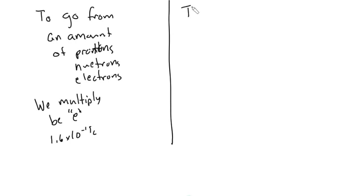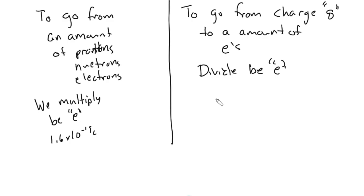But to go from charge, which will be some q number, to an amount of e's, I'm going to divide. So for example, we would take one coulomb of charge. If I want to know how many e's, I would divide that by the value of one e. And that would give me an amount of e's.